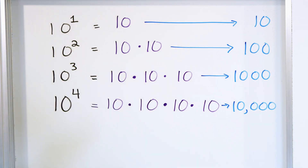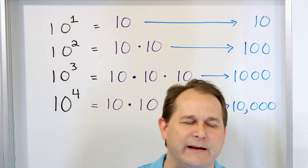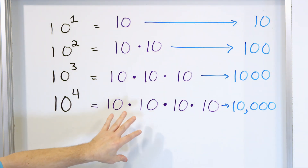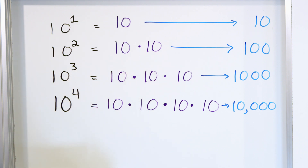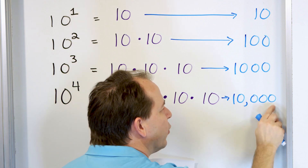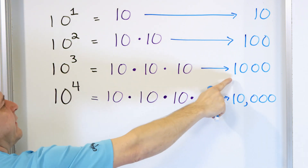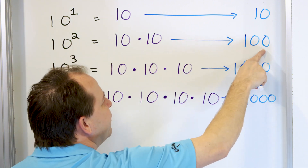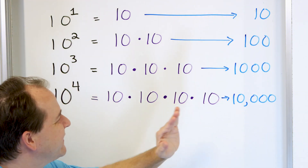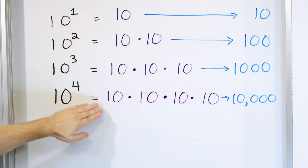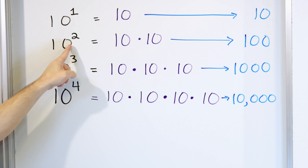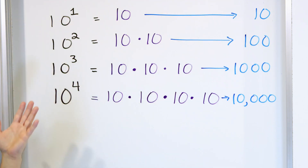I really want you to study the pattern here — this is why we actually study powers of 10. We use it in lots of science, chemistry, physics, math, engineering. Notice the pattern: 10 raised to the fourth power is just a 1 followed by four zeros. 10 to the third power is a 1 with three zeros. To the second power is a 1 with two zeros. And to the first power is a 1 with one zero. So 10,000 equals 10^4; 1,000 equals 10^3; 100 equals 10^2; 10 equals 10^1.